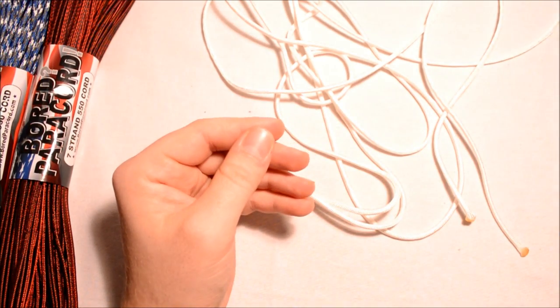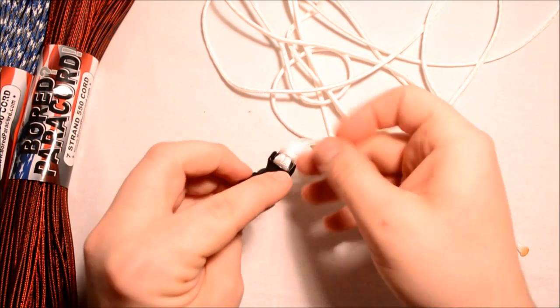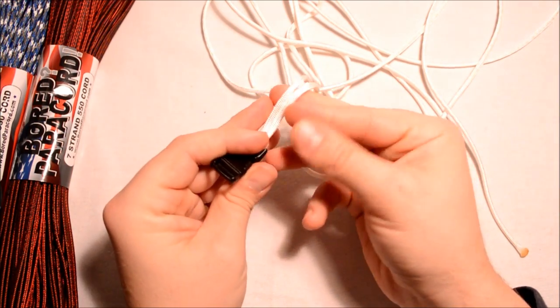This here is the single Genoese and we're basically going to do this in all white and then we're going to use the fids and thread it through these little holes on the side. Turns out good, looks similar to a baseball thread or softball thread.